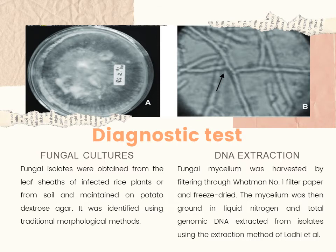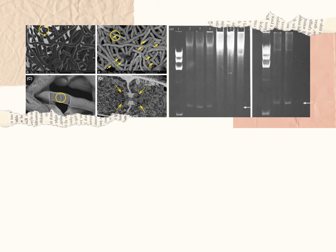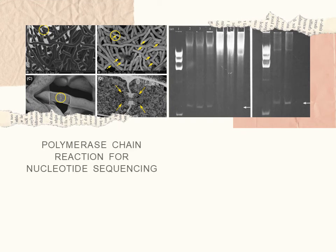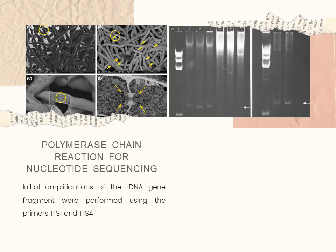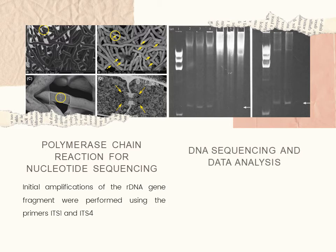The third method is the polymerase chain reaction for nucleotide sequencing. Initial amplification of the DNA gene fragment was performed using the primers ITS1 and ITS4.